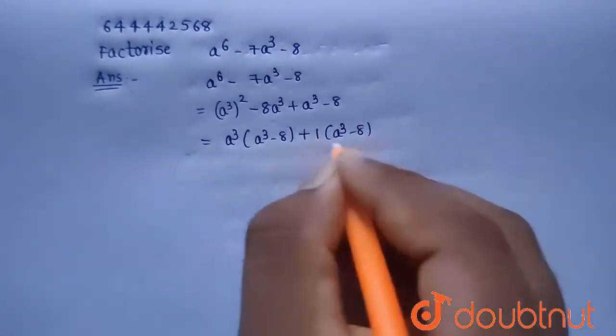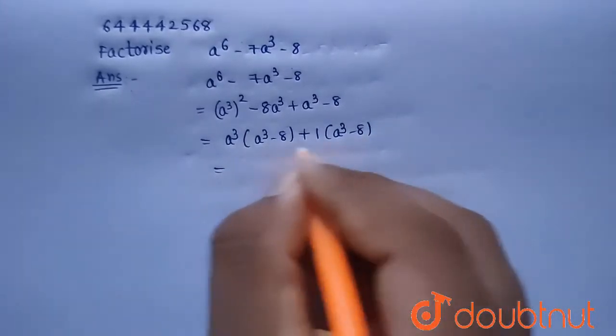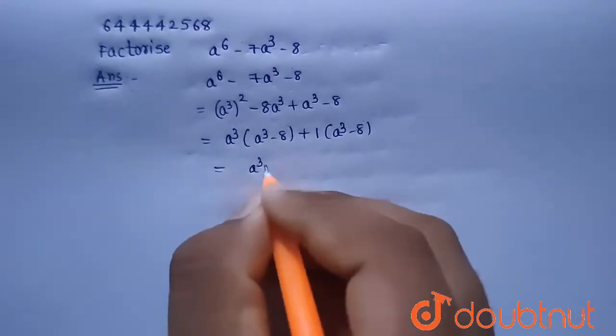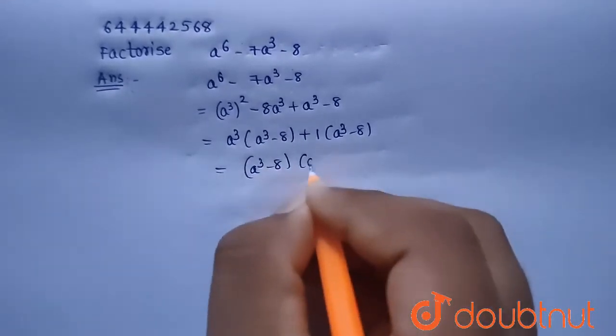Now there is a^3 minus 8 common for these two terms. So I am taking out a^3 minus 8 common. So (a^3 minus 8) into (a^3 plus 1).